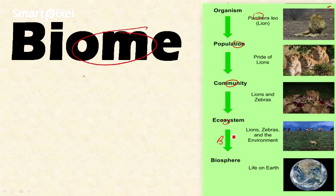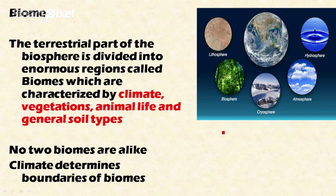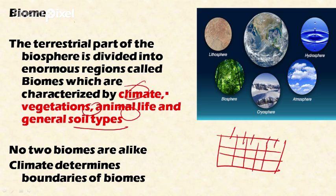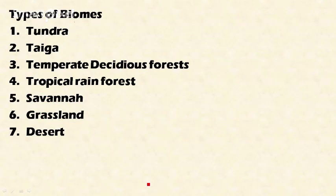After ecosystem, the next is biome. The biome is the terrestrial part of the ecosystem divided into enormous regions called biomes. If this is the terrestrial ecosystem, then it is divided into different regions and each individual region is called a biome. These biomes are characterized by particular climate, vegetation, animal life, and general soil types. These characteristics are similar for a particular biome, no two biomes are similar, and the climate determines the boundaries of each biome.